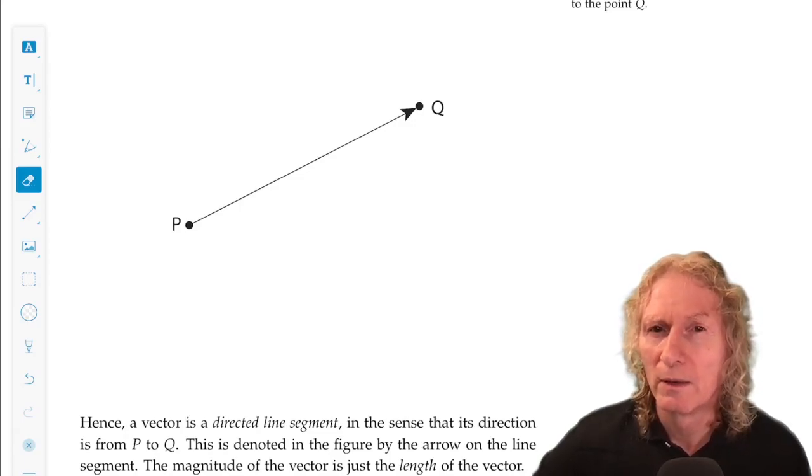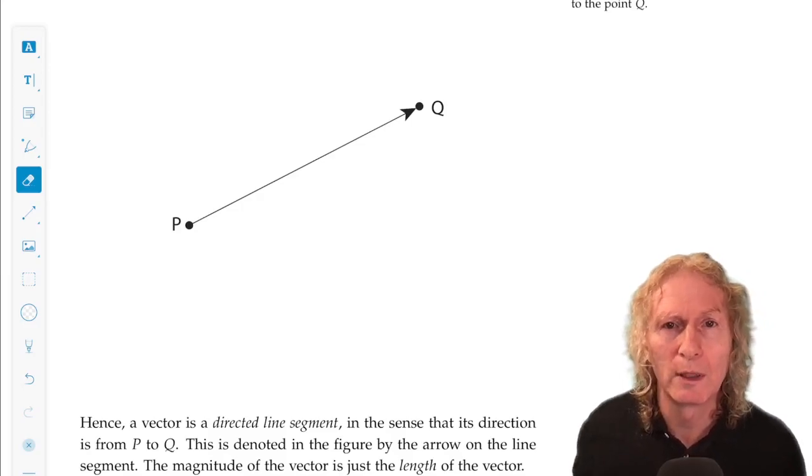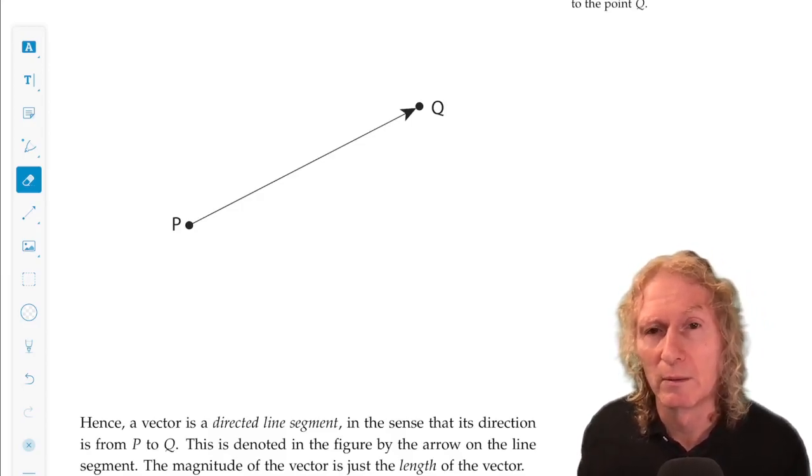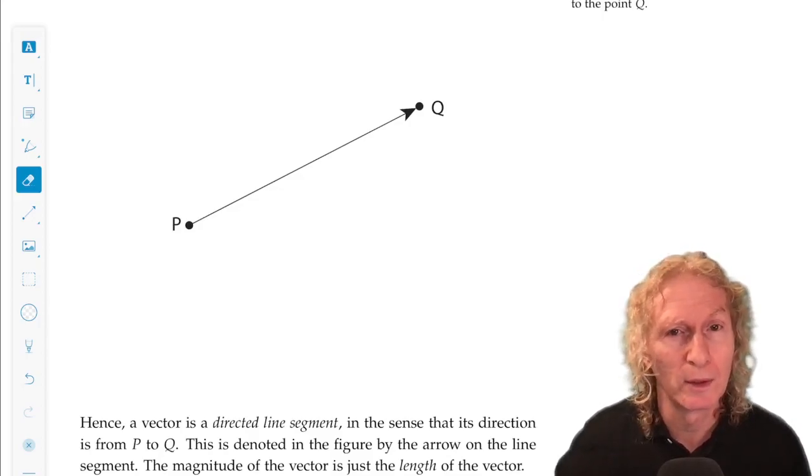Where it is, is not so crucial. So I could move P and Q around as long as I maintained the direction and the length, and it's still the same vector. And that's an important idea.